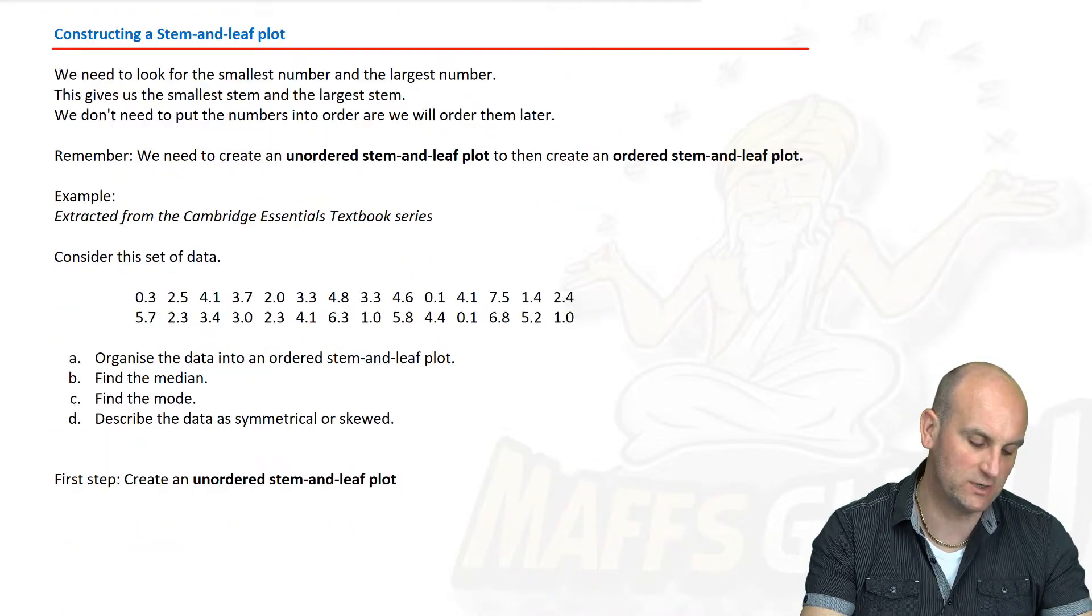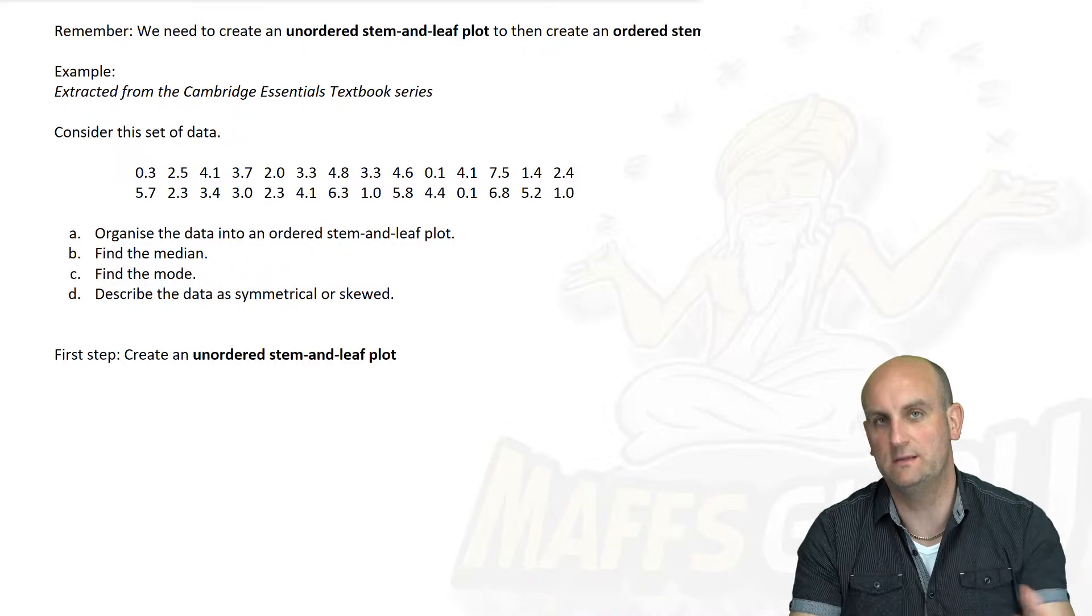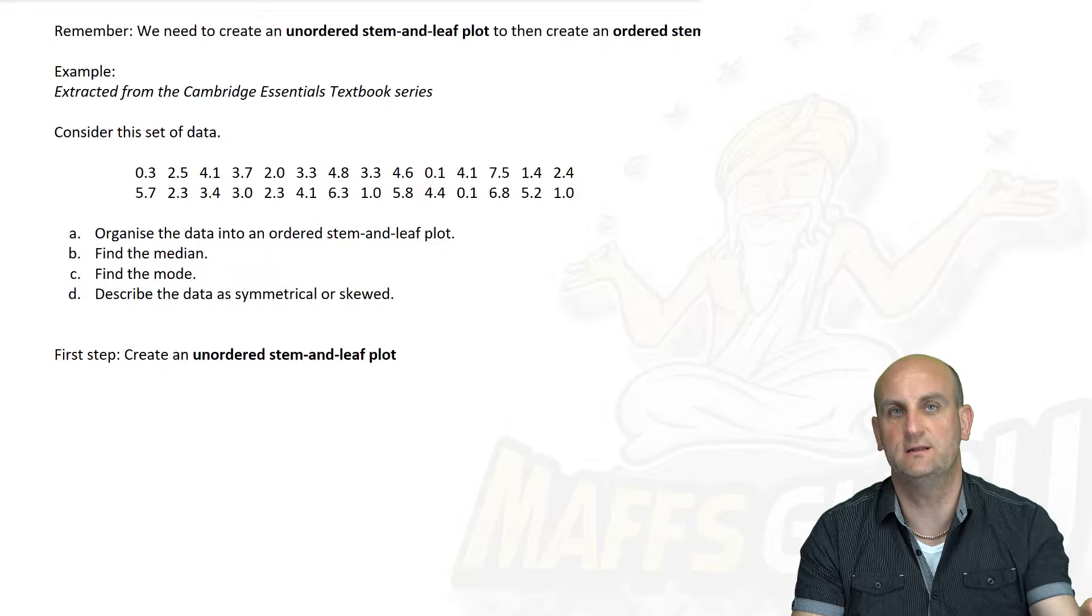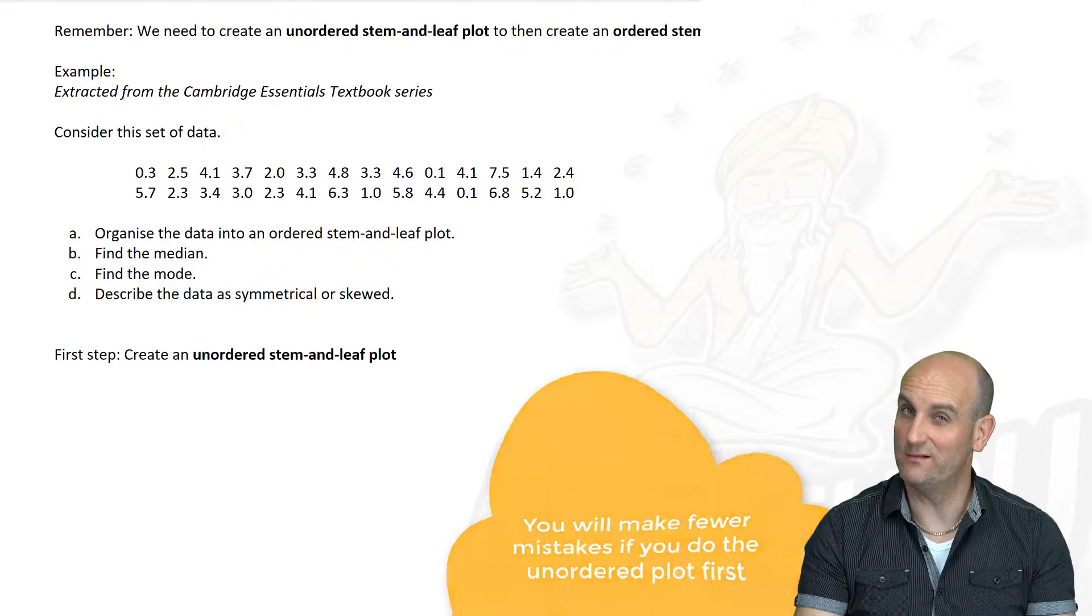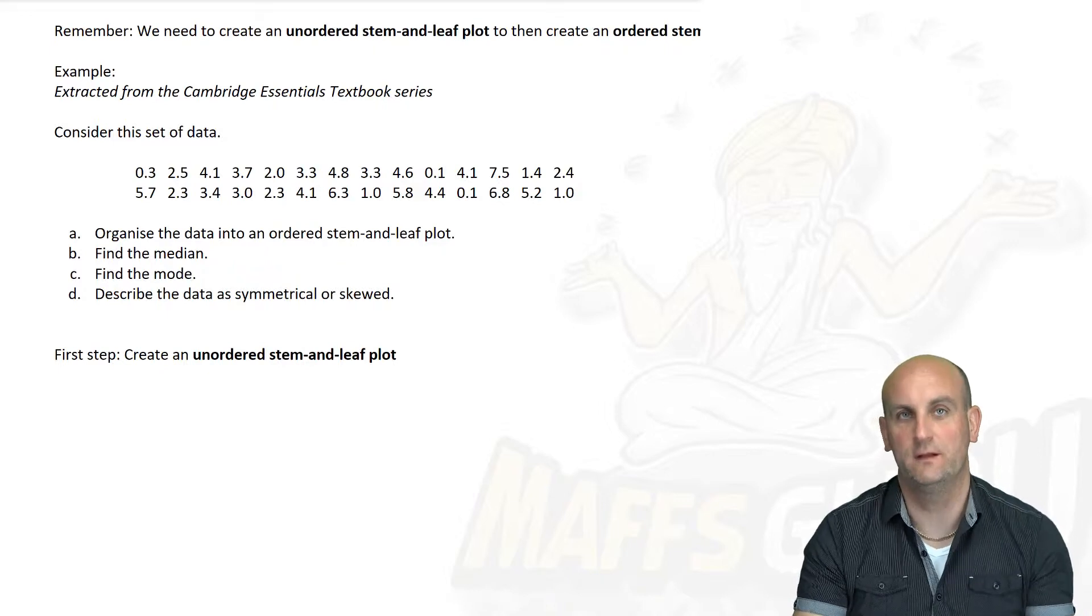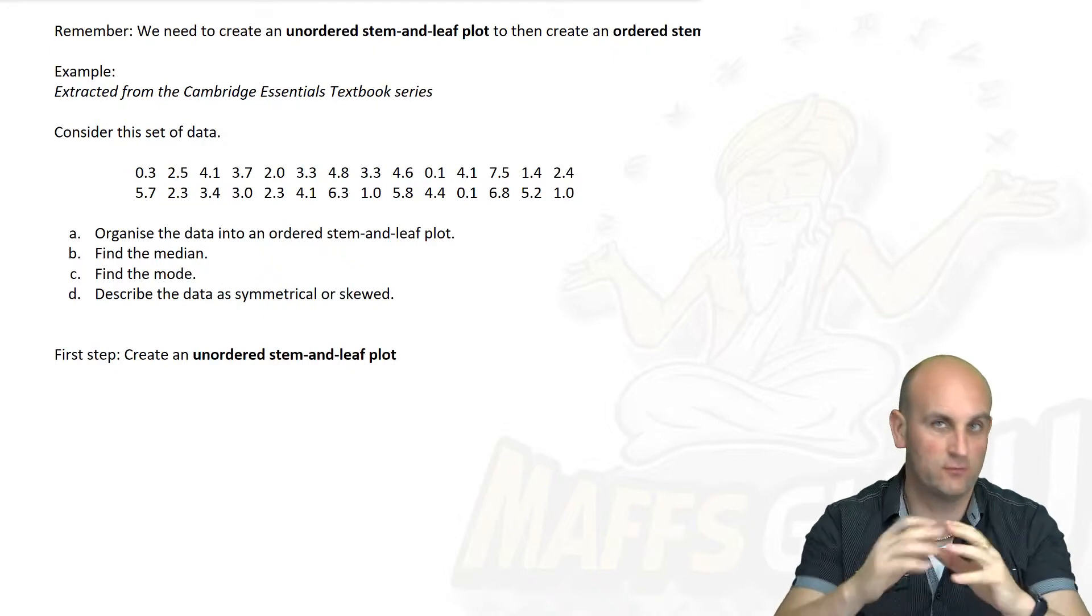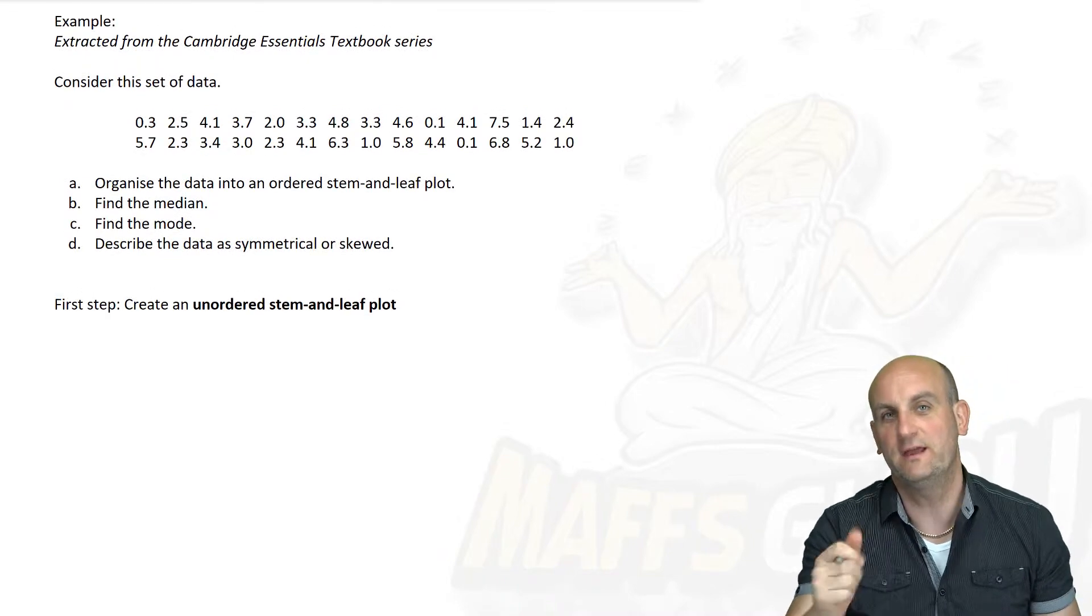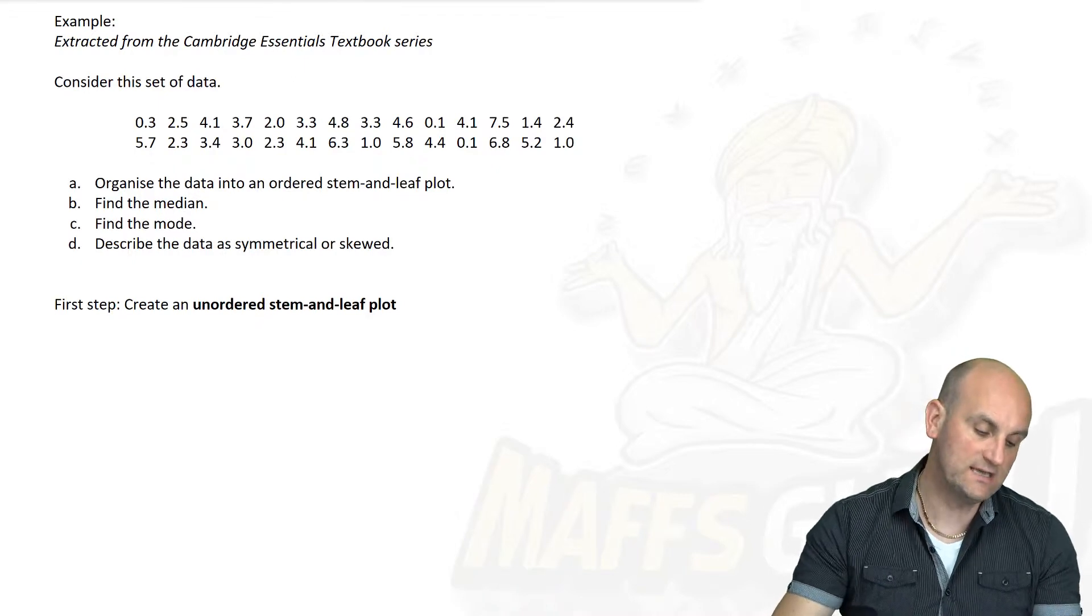Let's do it now by constructing a Stem and Leaf Plot. When we are doing this, you're advised to create what we call an unordered Stem and Leaf Plot first. Just take the data and put it in the Stem and Leaf Plot and then put it in order. This question has been extracted from the Cambridge Essential Textbook Series. Thank you Cambridge for allowing me to use your examples.